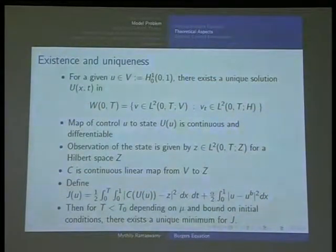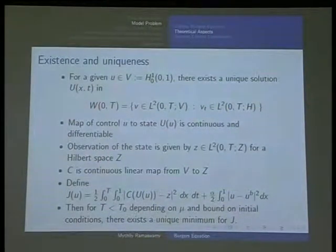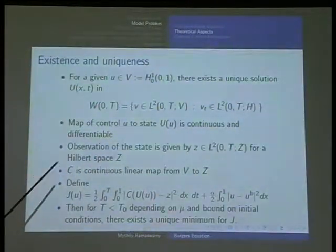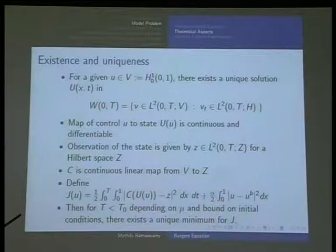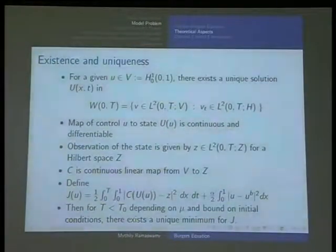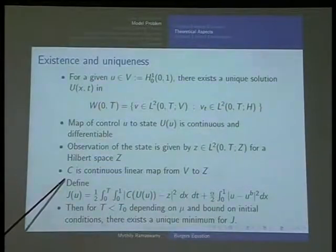Let me talk about the observation operator. The solution space will be H^1_0 of [0,1], and the capital U(x,t) lives in this W(0,T), which depends on V for each t. The control, which is the initial condition, is what we are trying to estimate. Our aim is to use the rough estimate of the initial condition, do data assimilation, and get the correct initial condition.